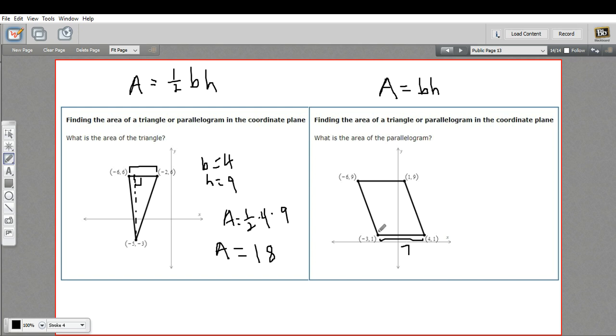And then in a parallelogram, we need a height. So we do the same thing. We take a perpendicular from one vertex to the opposite side. And again, this distance is going to be the difference in the y-coordinates. So we're going from 1 up to 9. That's 8. So our area here is just going to be the base times the height, or 56 square units.